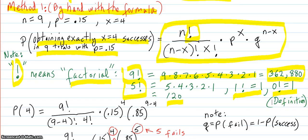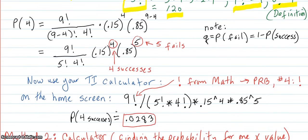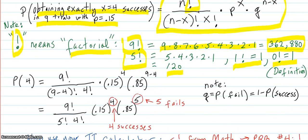So for our particular problem, we're going to plug in the numbers. P of four, which means x equals four, four successes, is nine factorial over nine minus four factorial, times four factorial, times 0.15 to the fourth. That's the x. And 0.85 to the n minus x, nine minus four.